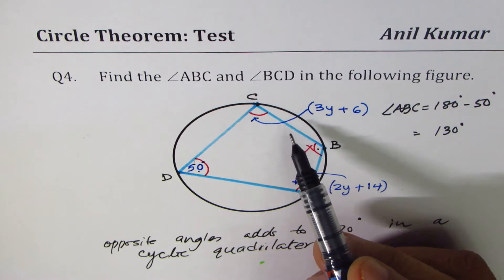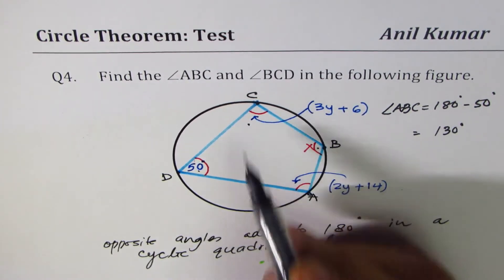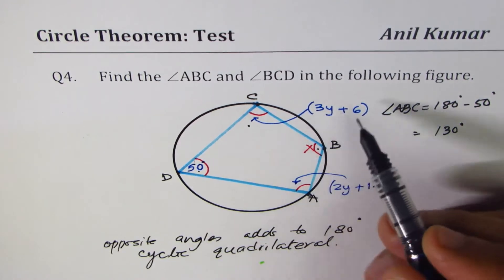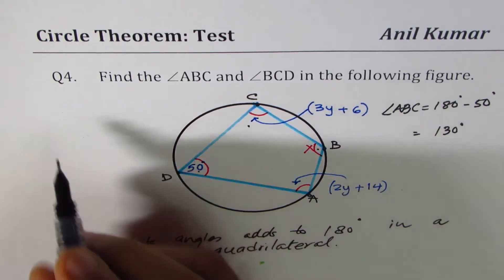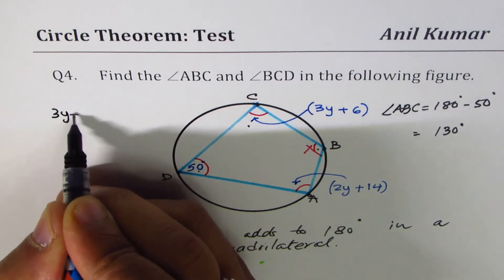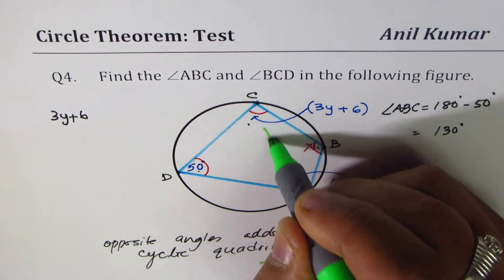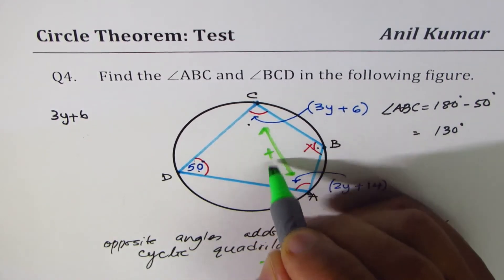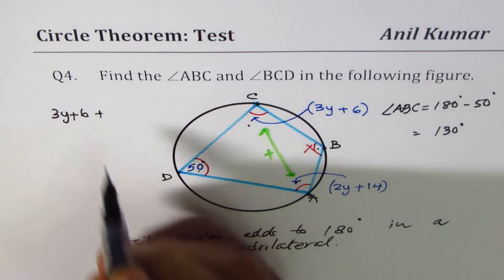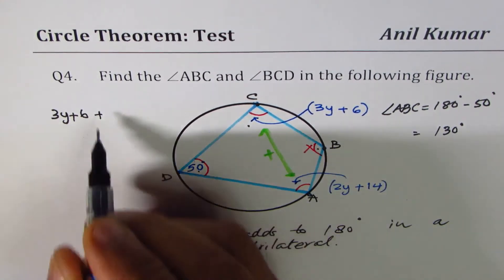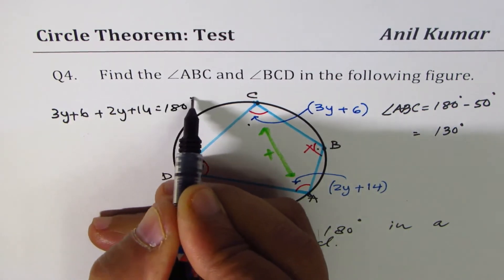Now to find the angle BCD. BCD, that means this angle. We are given a linear equation here which is 3y plus 6, and the opposite side... I mean these we are talking about now. They should add up to 180. So 3y plus 6 plus 2y plus 14 should equal 180 degrees.